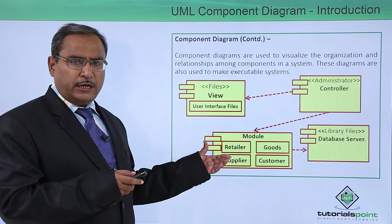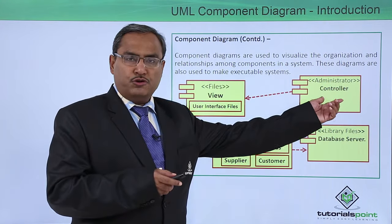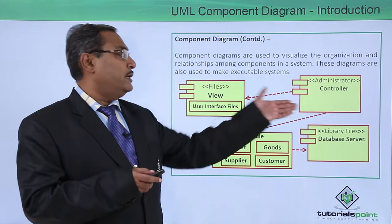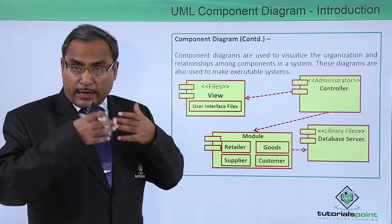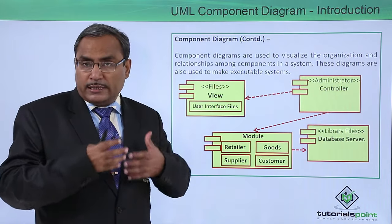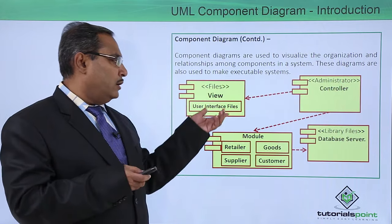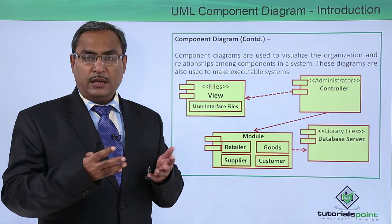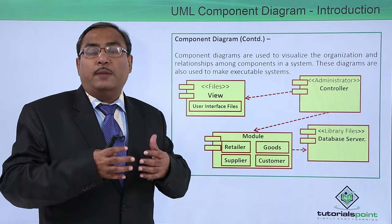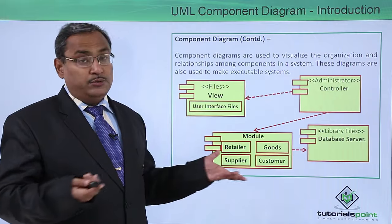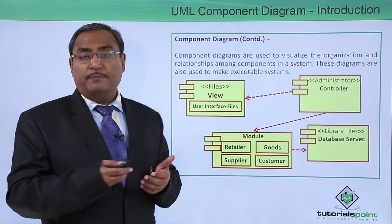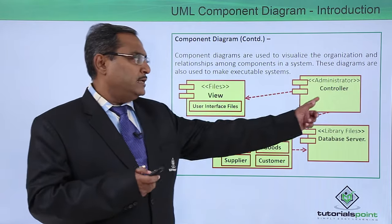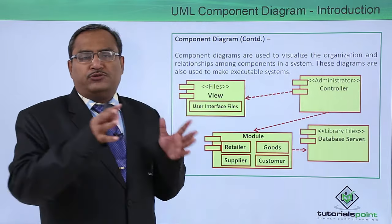Now consider this component diagram. Here we have one controller. This controller has a view system which interacts with the view so that the user can see the output of the application on their screen. The view system contains user interface files — how the user will interact with the software, what the GUI interface will look like — and this controller is the administrator of the system.